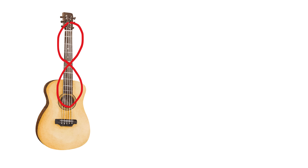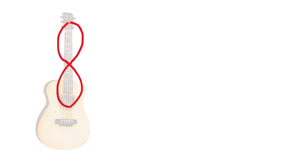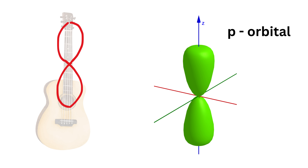The simplest note, when you pluck the string gently, vibrates evenly and gives a smooth sound — that is like the s orbital. But if you press the string of a guitar in the middle, it forms two halves vibrating opposite to each other — that's like a p orbital with a node in the center.